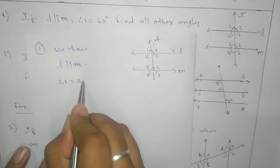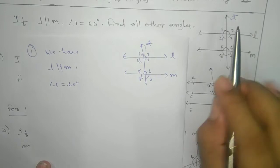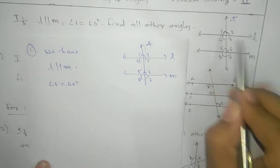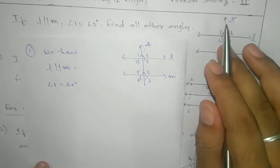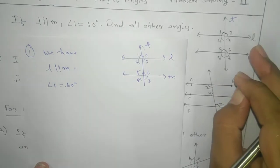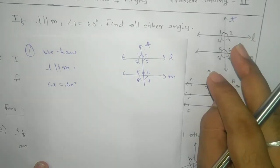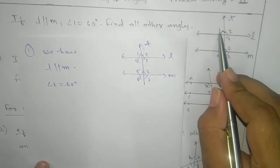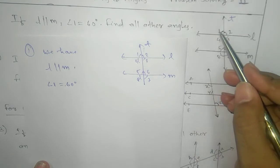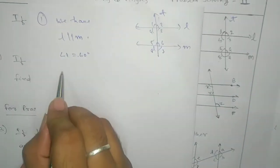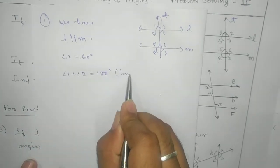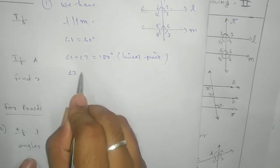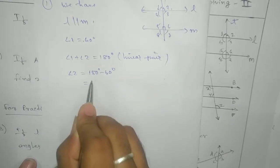Angle 1 is 60 degrees. Notice that there are eight angles but essentially only two distinct values — four angles on each side. To find angle 2, we use the linear pair: angle 1 plus angle 2 equals 180 degrees. So angle 2 equals 180 minus 60, which gives us 120 degrees.